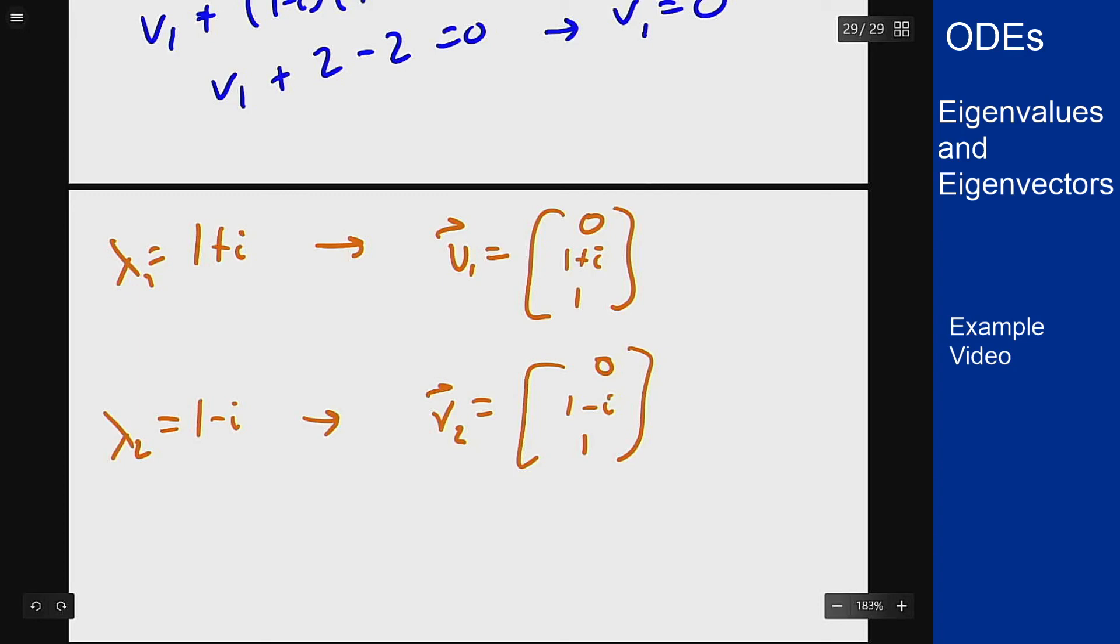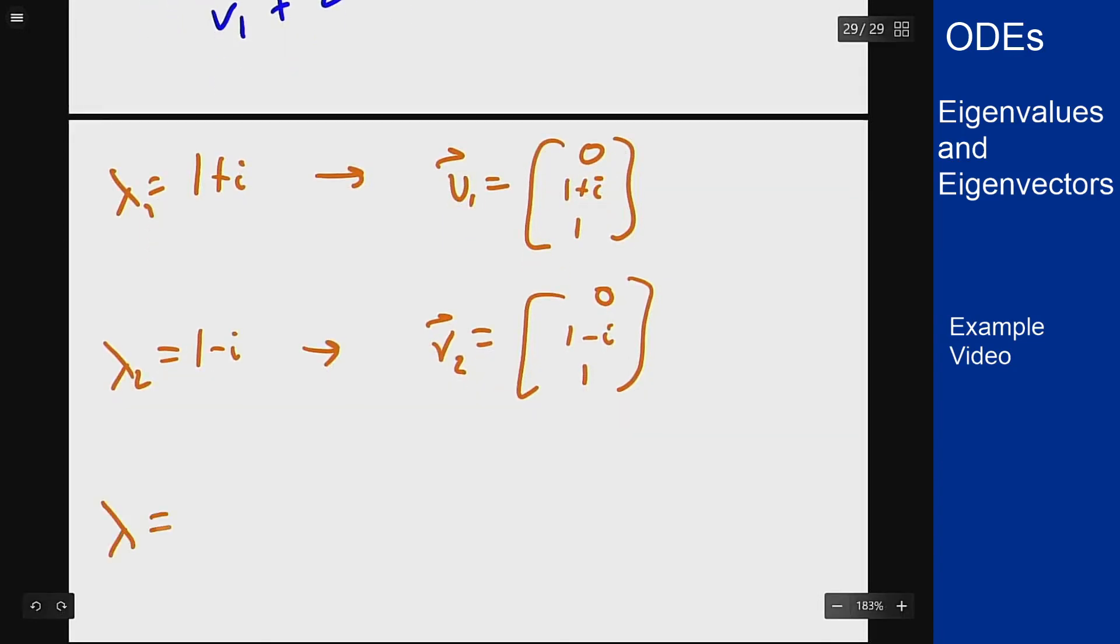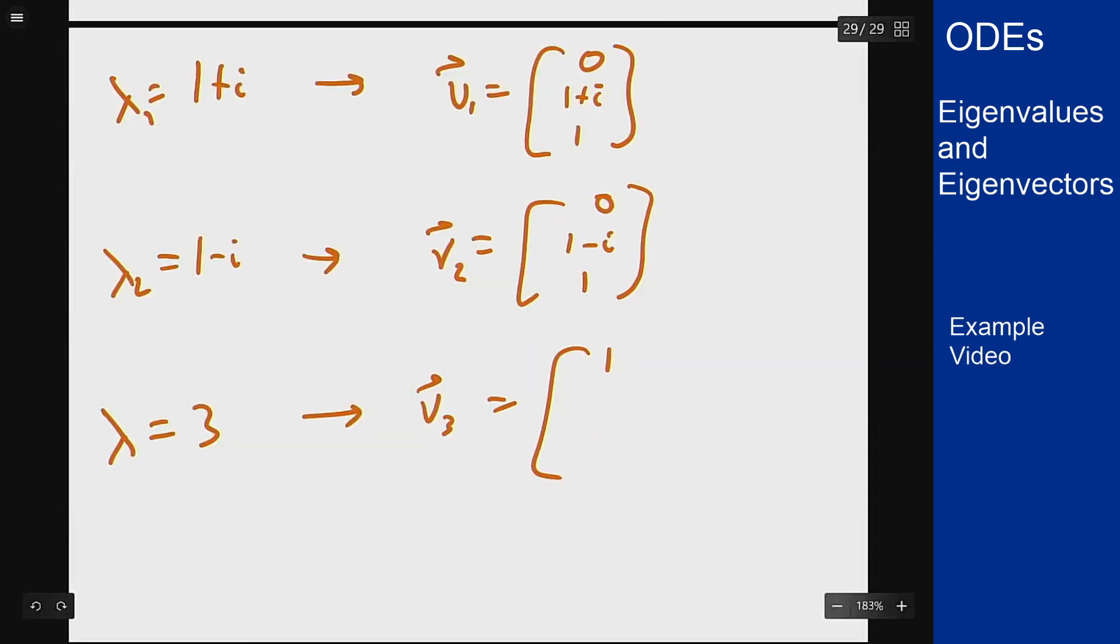We can then combine it with our answer from before, that for lambda equals 3, our vector was 1, 1, 0.